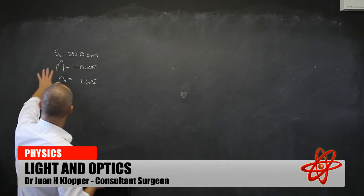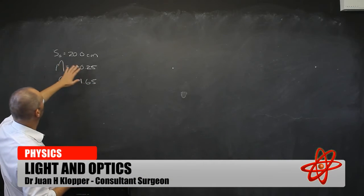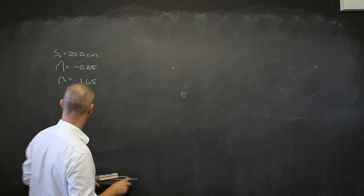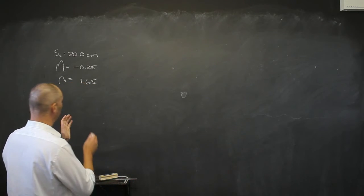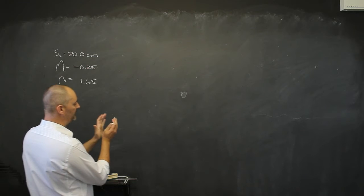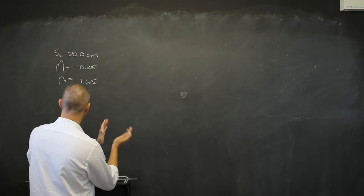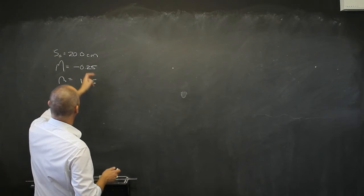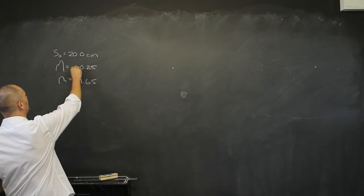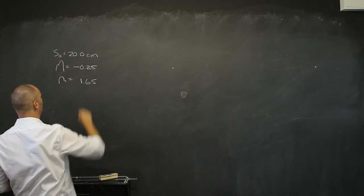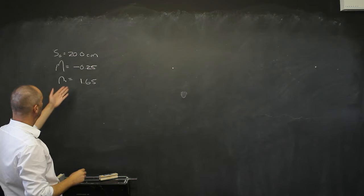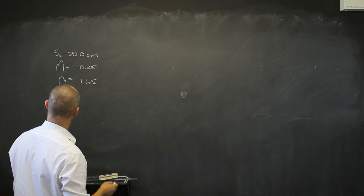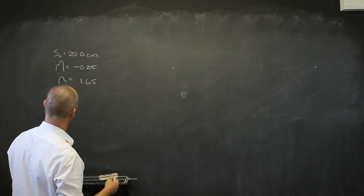Another thin lens problem. All I'm told is I have an object in front of a symmetric lens — I don't know if it's concave or convex, but it's symmetric, so the radius of curvature of both sides will be the same. It magnifies at negative 0.25, which immediately tells me this is an inverted image and it is reduced in size. I'm told the refractive index of the lens as well. What can I say about the type of lens?